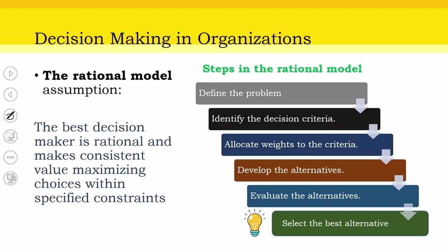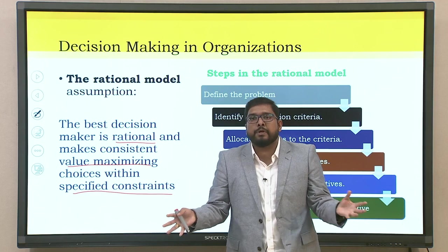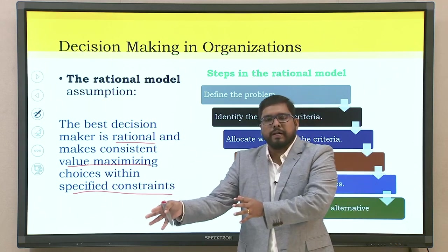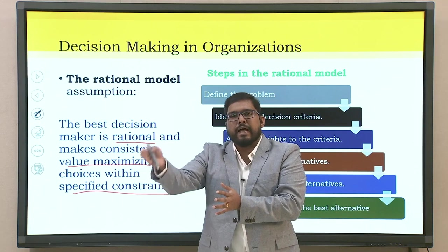Now let us look into decision making in organization and the rational model. The best decision maker is rational and makes consistent, value-maximizing choices within specified constraints. You may have constraints in terms of resources, time, or available investments. All aspects have to be taken into consideration, and with those constraints in picture, you have to try to maximize value to stakeholders — that would be the best rational decision.